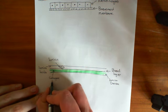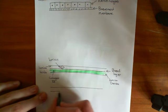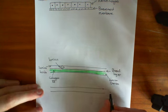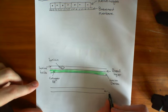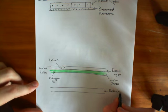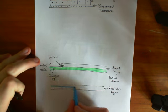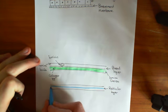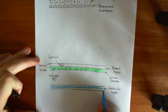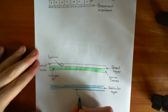And then the other portion of the basement membrane is another layer down here called the reticular layer. The reticular layer is made up of collagen type 3, which we've drawn blue previously. So here is collagen type 3 fibres here.